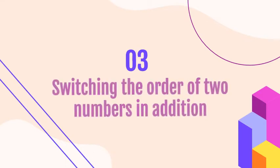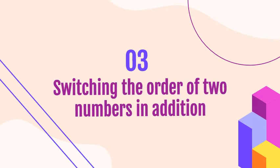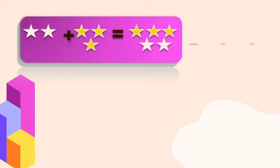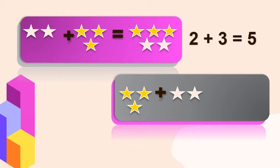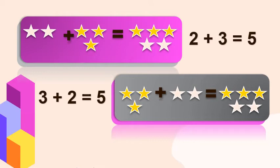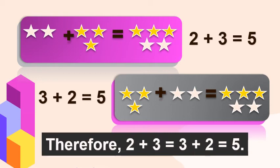Lesson number three: switching the order of two numbers in addition. This is very simple. For example, two stars plus three stars is equal to five stars. In number sentence, two plus three is equal to five. We are going to switch the numbers of the addends. So we get three stars plus two stars is equal to five stars. Three plus two is equal to five. When you switch the numbers of the addends, you will still get the same sum.